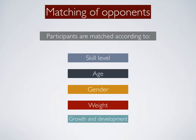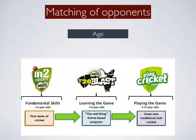Moving on to matching of opponents. Players and participants are matched according to their skill level, age, gender, weight or growth and development. When it comes to matching players according to their age, cricket is a great example. Various versions of the game are set up to ensure that those with fundamental skills are playing against players of similar skill level, generally at the younger age group of 5 to 6. They don't progress to a full version of the game until age 9. This ensures their safety and that the game is appropriate to their level of skill.